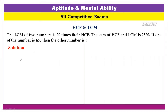Hello everyone. In this video, we have an HCF and LCM based question. The LCM of two numbers is 20 times their HCF. The sum of HCF and LCM is 2520. If one of the numbers is 480, then find the other number.